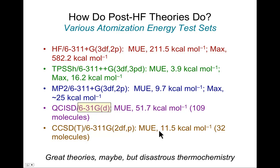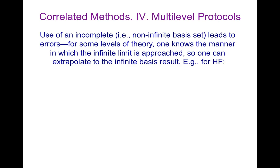All these advanced theories are wonderful, but they give disastrous thermochemistry if you can't afford to use the best possible basis sets. One thing that's been explored is so-called multi-level protocols. We know that a non-infinite basis set leads to errors, and for different levels of theory we actually know the way in which that error accumulates. In principle, you can extrapolate to an infinite basis by looking at the behavior with a few different basis sets at the same level of theory.